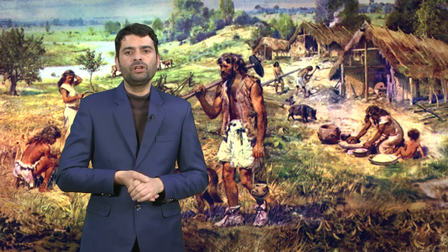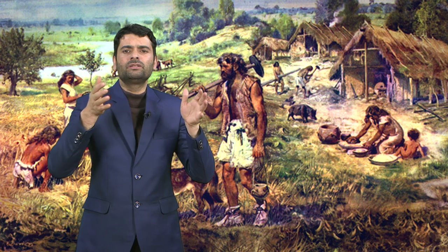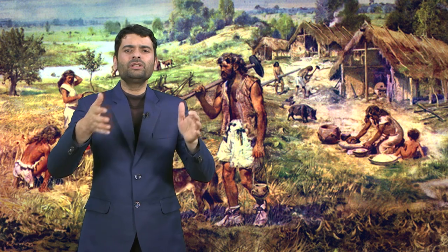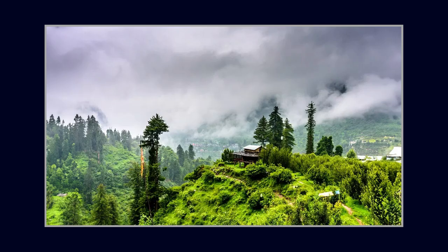Wheat and barley have been reported from Balathal in southeast Rajasthan and appear as dominant crops in Malwa. Millets, generally cultivated in the south, are represented in Balathal too. There are a number of Chalcolithic sites in central India and Rajasthan, including the Kayatha culture in the Chambal Valley, Dangwada near Ujjain, and Ahar in Rajasthan. In contrast to the Indus culture, the peasant in the Gangetic plains was able to boost output by moving to near-virgin fields reclaimed from forests, thanks to the monsoons.